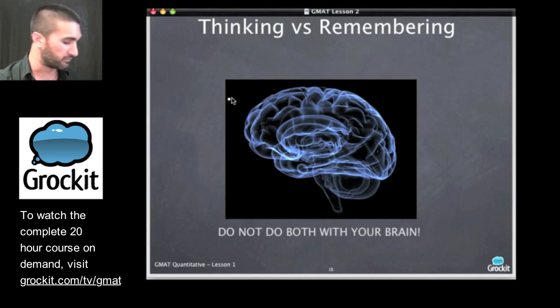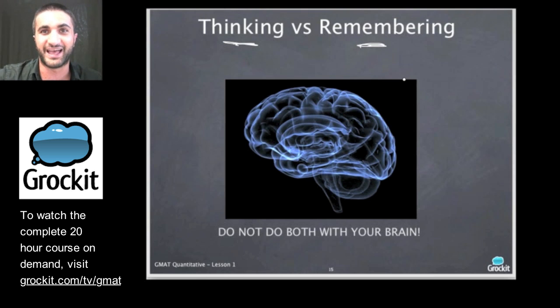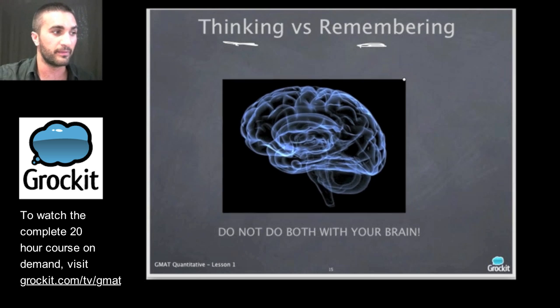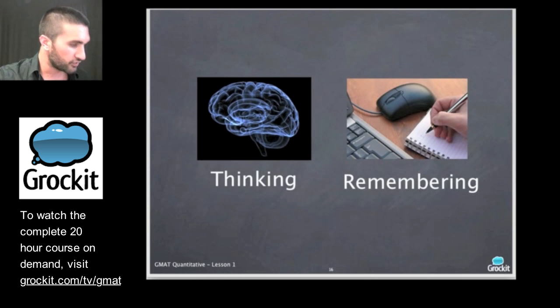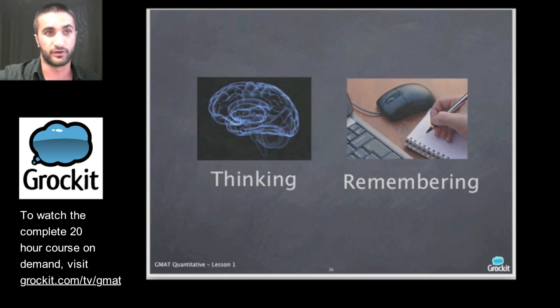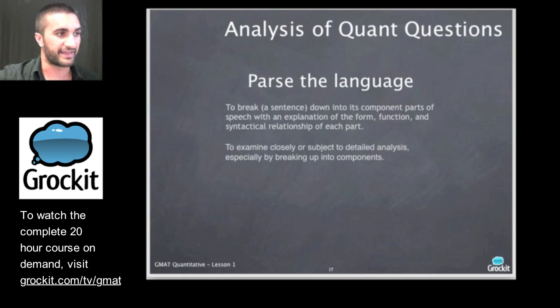Let's go back to this old brain image and remind ourselves that there's two things we have to do on the GMAT. We have to think and we have to remember. Do not do both of these things with your brain because that's what the GMAT wants you to do. And if you do, you're going to tax your brain. You're not going to be able to think as well. So you want to use your brain for thinking and the GMAT scratch pad for remembering. So you'll hear me reiterating that point a lot.